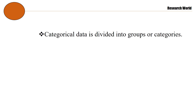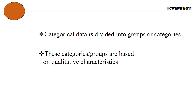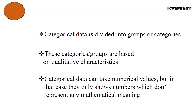Categorical data is divided into groups or categories. These groups are based on qualitative characteristics. Categorical data can take numerical values, but in that case they only show numbers which don't represent any mathematical meaning.